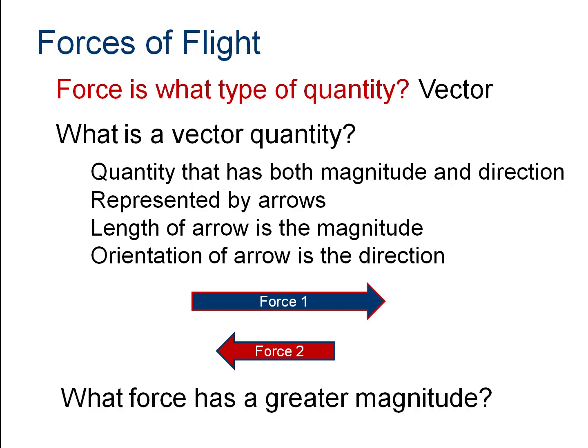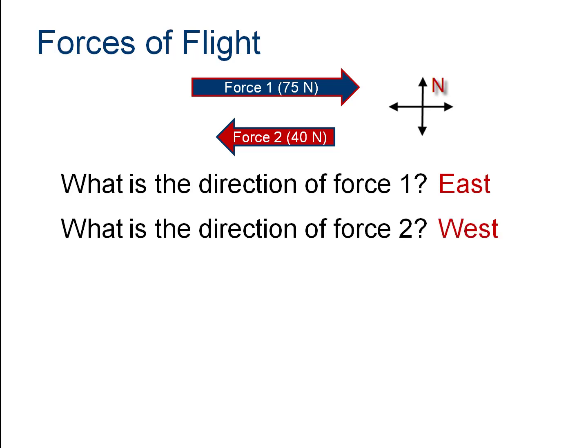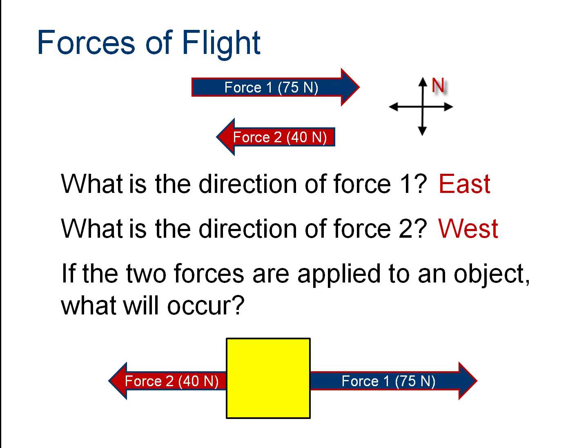Force one is obviously greater. If force one is 75 newtons and force two is 40 newtons, the net force is going to be to the east, since force two is acting to the west and force one is acting to the east. If east is positive, we would say it is negative 35 newtons to the east.